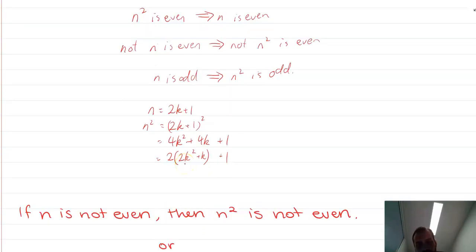And I'll get 2K squared plus K. K is an integer, so 2K squared plus K. We can let that equal N, and that's going to be an integer. 2N plus 1. Done.